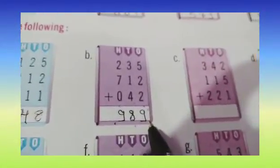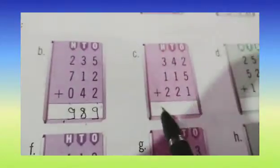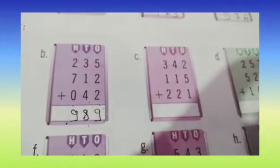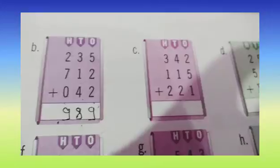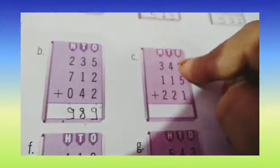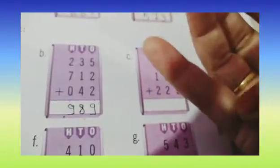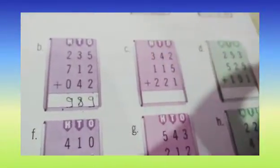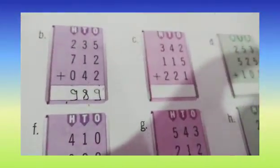Okay children, now part C: 2 plus 5 plus 1, 4 plus 1 plus 2, 3 plus 1 plus 2. So 2 plus 5 — after 2 start counting: 3, 4, 5, 6 and 7. So 2 plus 5 is 7. And 7 plus 1 is 8. So here we are going to write 8.